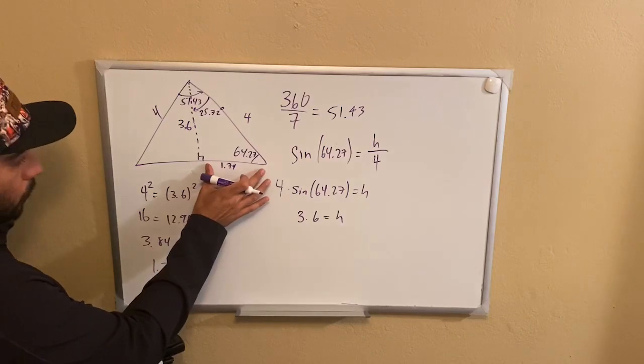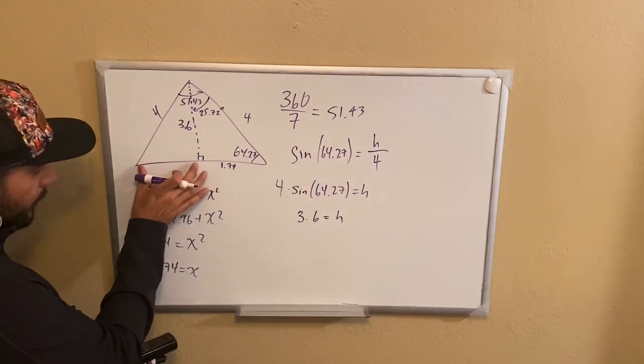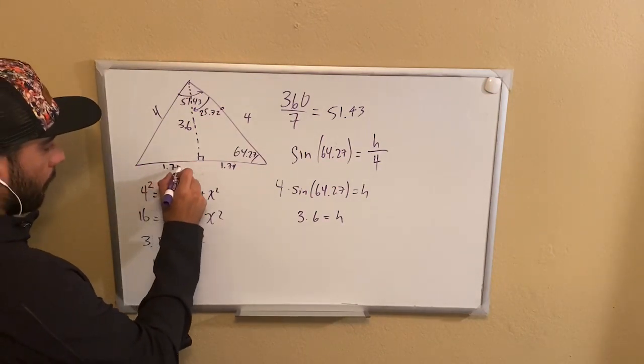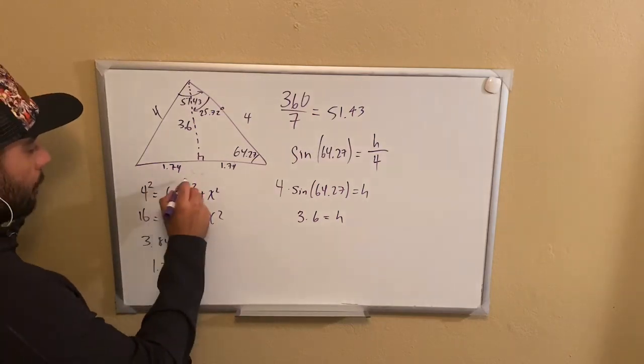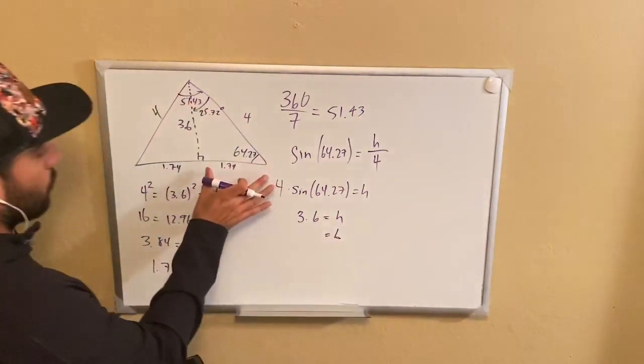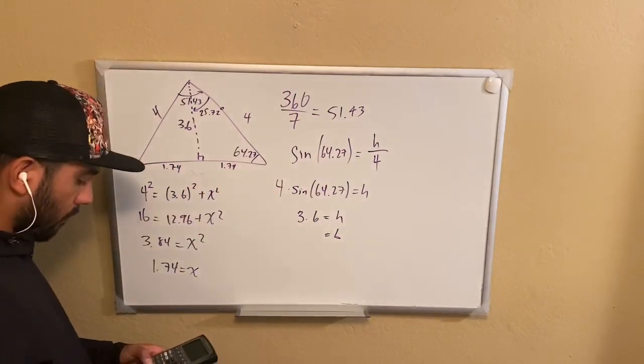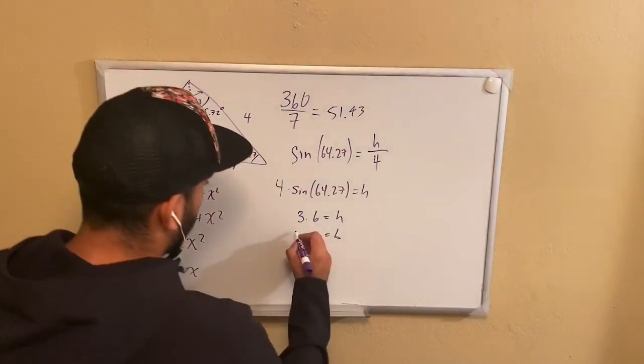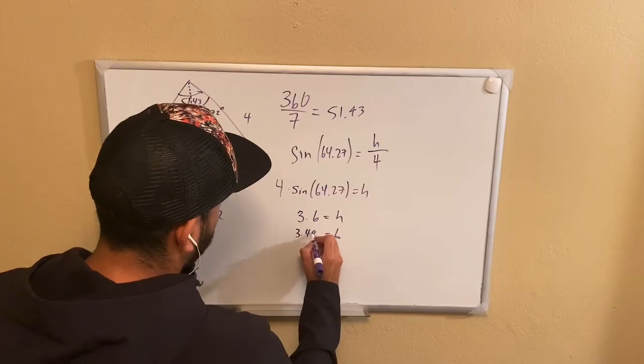So we know this value is 1.74, meaning that if this is 1.74, this is also equal to 1.74. That means that our entire base is going to be equal to 1.74 plus 1.74, which is 3.48.